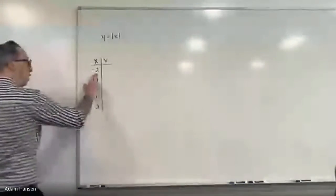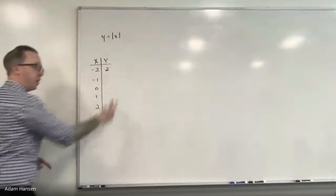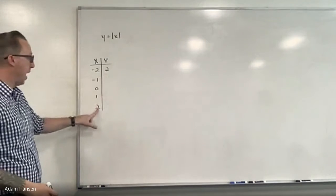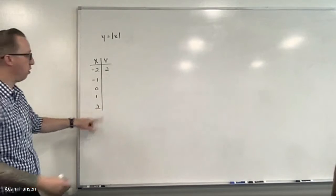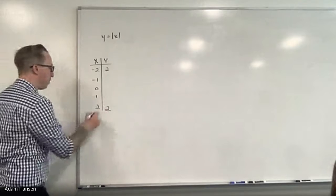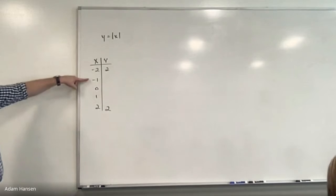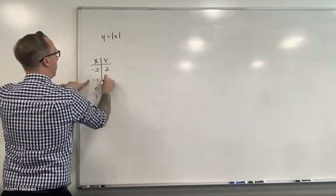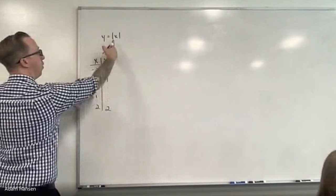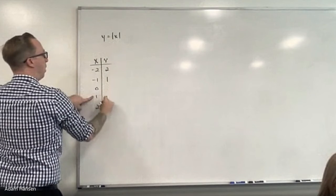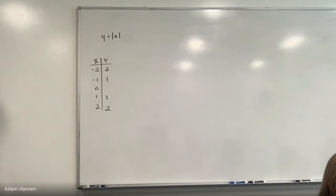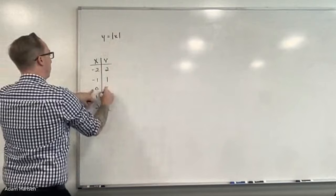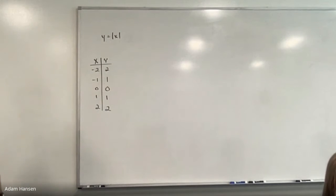How far is negative two from zero? Two. That's why absolute value is always positive — I'm taking the absolute value of a negative number, it's just the positive part of it. Is the absolute value of positive two any different than negative two? No — positive two is still two away from zero. What's the absolute value of negative one? One. When I plug in negative one for x, the absolute value of negative one for my y-coordinate is positive one. Absolute value of zero is zero — it's at zero already.